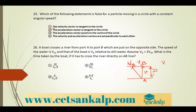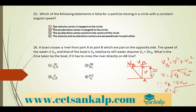Drawing the vector diagram: VB² = V² + VW², where V is the effective velocity across the river. So V = √(VB² − VW²). Since VB = 2VW, V = √(4VW² − VW²) = √(3VW²).